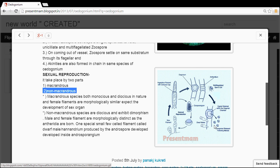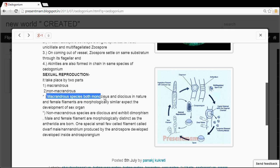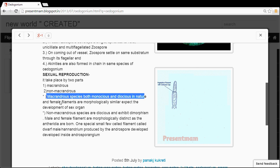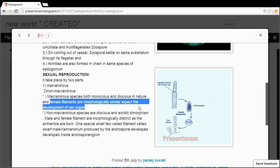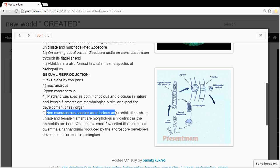Macrandrous species are both monoecious and dioecious in nature, and male and female filaments are morphologically similar except for the development of sex organs. The nannandrous species are dioecious and exhibit dimorphism in which male and female filaments are morphologically distinct.